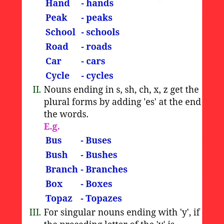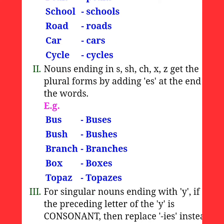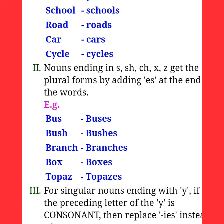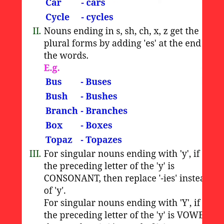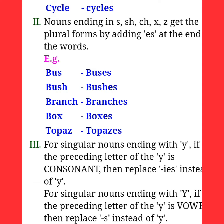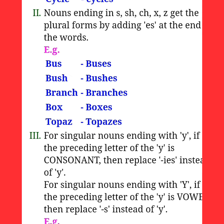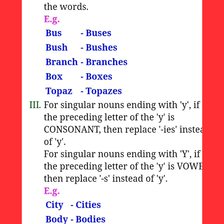Nouns ending in S, SH, CH, or X get the plural form by adding 'es' at the end of the word — for example: bus/buses, bush/bushes, branch/branches, box/boxes.